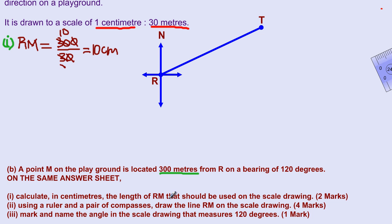Now in part two, they are asking us, using a ruler and a pair of compasses, draw the line segment RM on the scale drawing, and that's four marks. We're going to construct that now. Remember, as I've stated in the previous video, when working with a bearing, the north line is the reference line because a bearing is measured from the north going in a clockwise direction. Anytime working with bearings, you start from the north line and then you move in a clockwise direction.